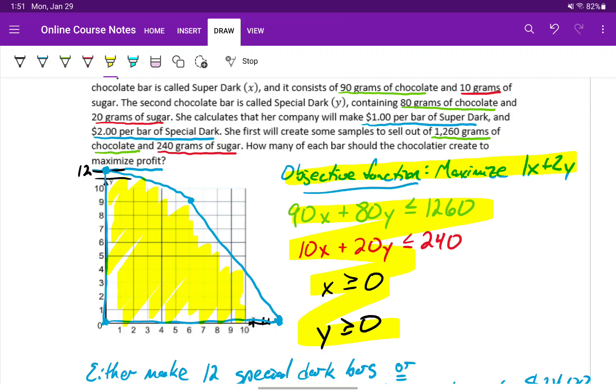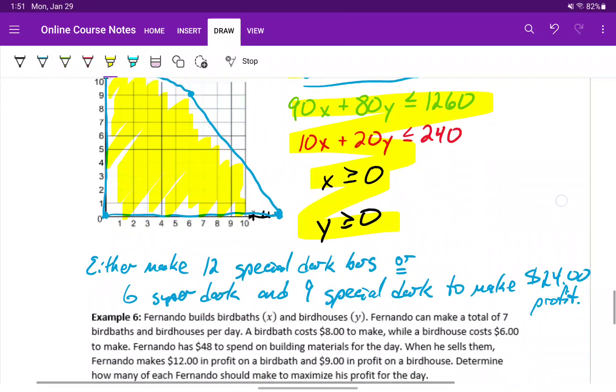And then we take each of those x, y pairs at the corners of that polygon and plug them into our objective function. Since we were looking to maximize, we found the x, y pairs that gave us that maximum function value, which was either at y equals 12, or at x equals 6, y equals 9, and reported that maximum possible profit.